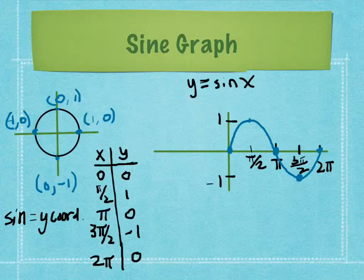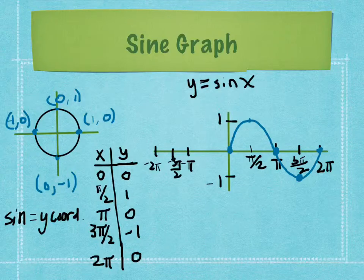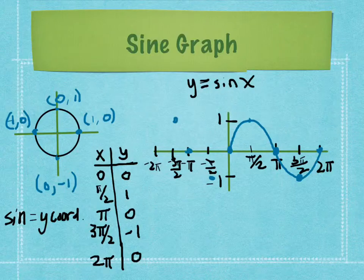We get the same graph if we go around the unit circle backwards, using the same values on the negative side: -2π, -3π/2, -π, and -π/2. Plotting those points, the pattern repeats — going down, back to the middle, up, then back down. The image on the negative side is identical to the positive side.